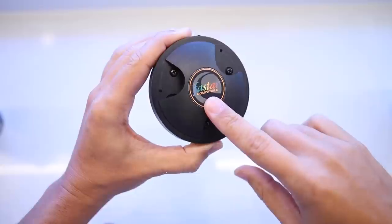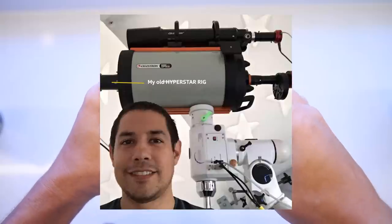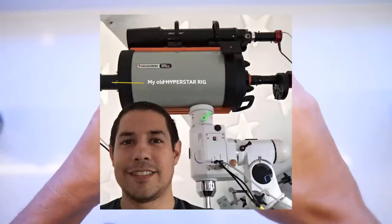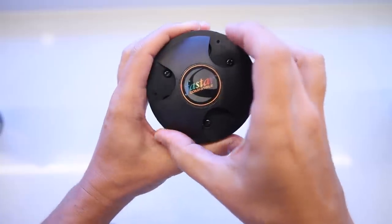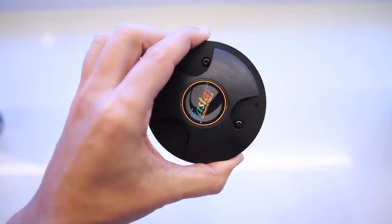So here is the secondary mirror of the C11. Yours may or may not be fast star compatible, which means you can take it out and use a hyperstar reducer, which is pretty cool. I've used them. They are amazing, but it's got the three screws here.